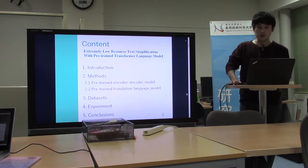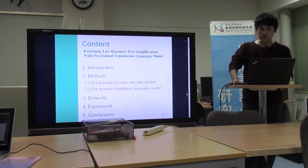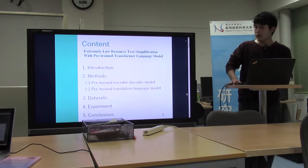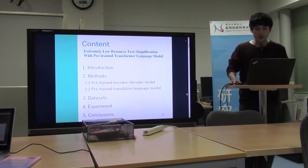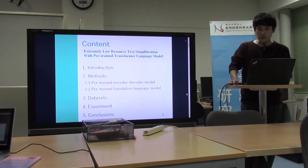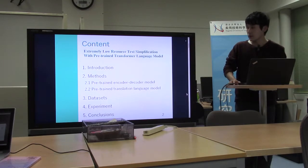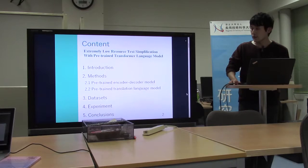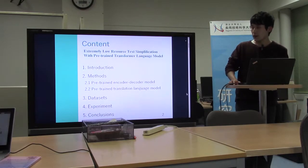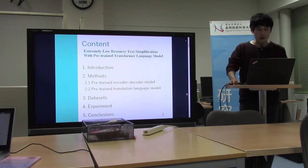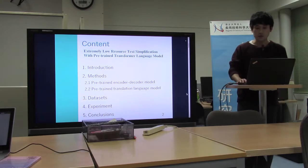First, I will give a short introduction. Second, I will describe two approaches for text simplification: pre-trained encoder-decoder model and translation language model. Third, I will talk about text simplification parallel corpus of local government announcements. After that, I will show the experimental results. And finally, I will finish with short conclusions.